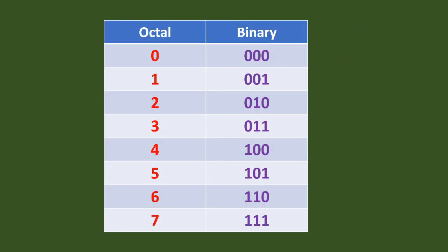For the complete listing, we have octal values and their binary equivalents. The octal value 0 is represented as 000 in binary, and 1 in octal is represented as 001 in binary. These three digits represent the switches for 1, 2, and 4. Continuing up to octal number 7, the binary equivalent is 111, because if you add 4 plus 2 plus 1, the result is 7.